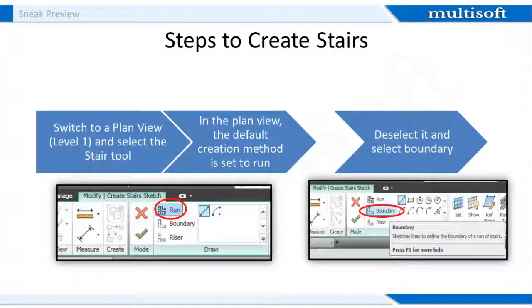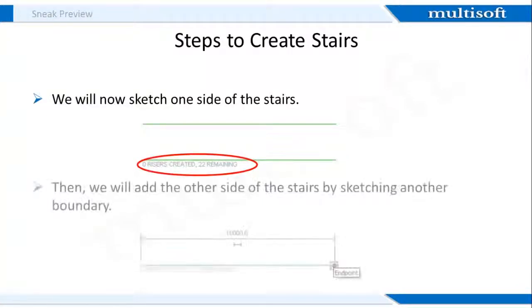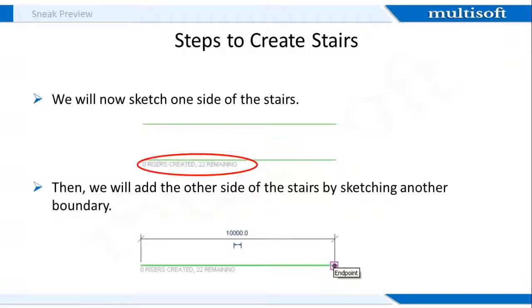On selecting boundary, a choice for standard sketch lines, pick tools, etc. will appear. Now for sketching one side of the stair, you can notice a text underneath the green line. At each stage of the stair creation process, Revit lets us know how many risers we have created and how many we still have to place. But now the question arises as to how Revit decides that this particular stair will have 22 risers and not 34.